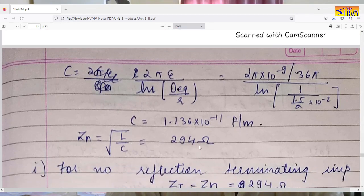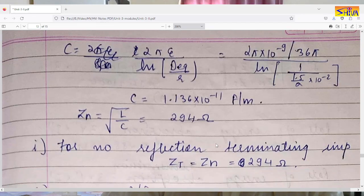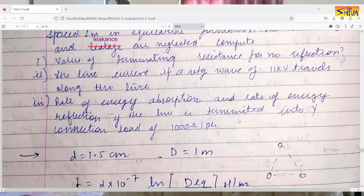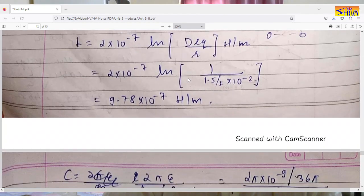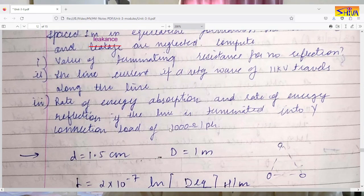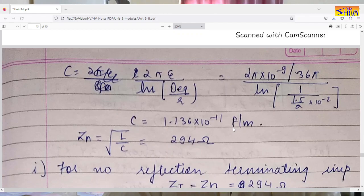The surge impedance Zn = √(L/C) = 294 ohms. For no reflection, the terminating impedance Zt must equal Zn, so Zt = 294 ohms. For part two, the line current equals the phase voltage divided by the surge impedance: (11 kV / √3) / 294 = 21.6 amperes.